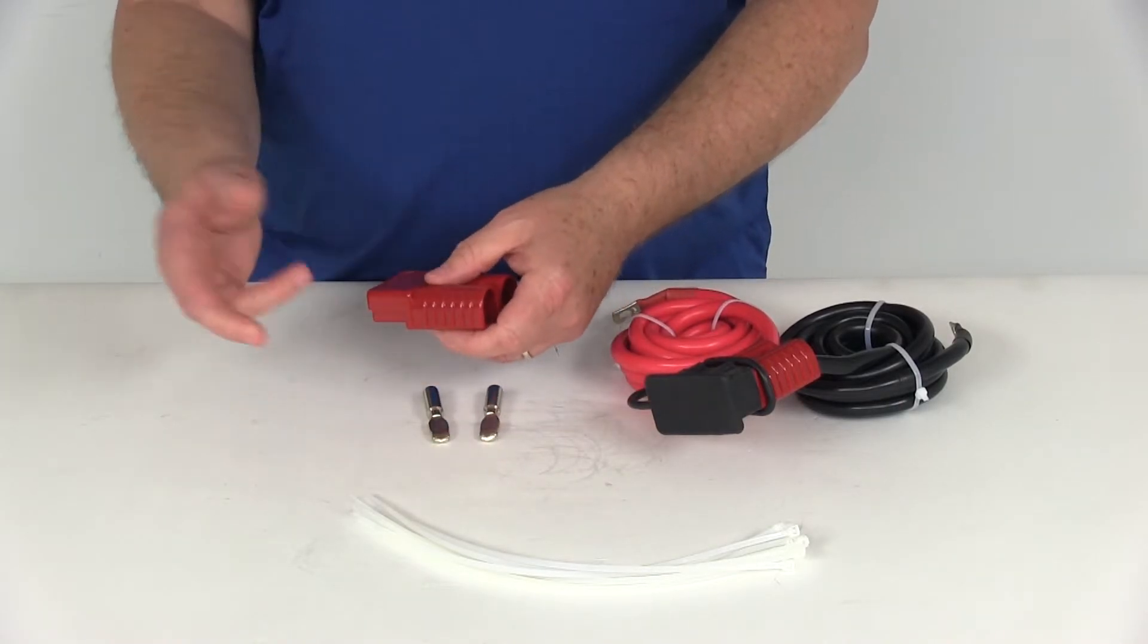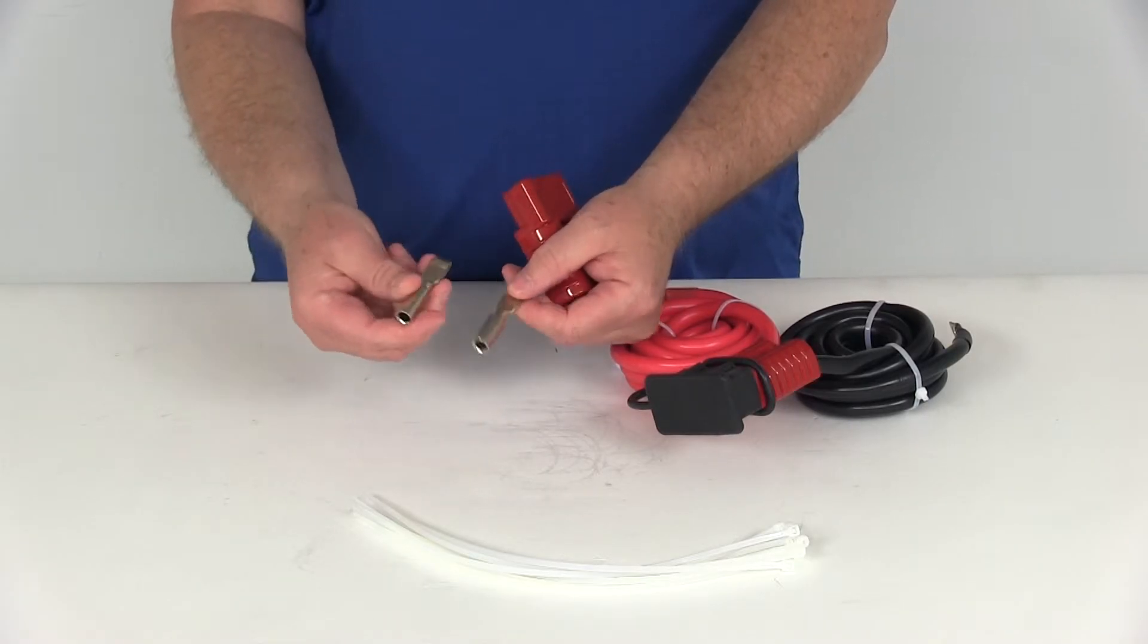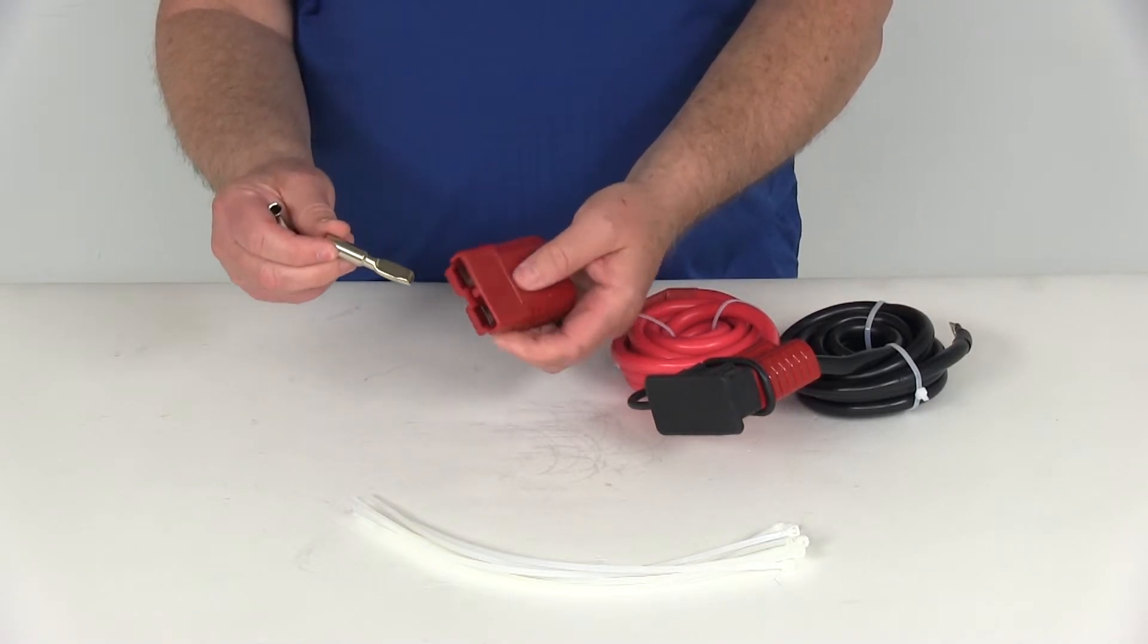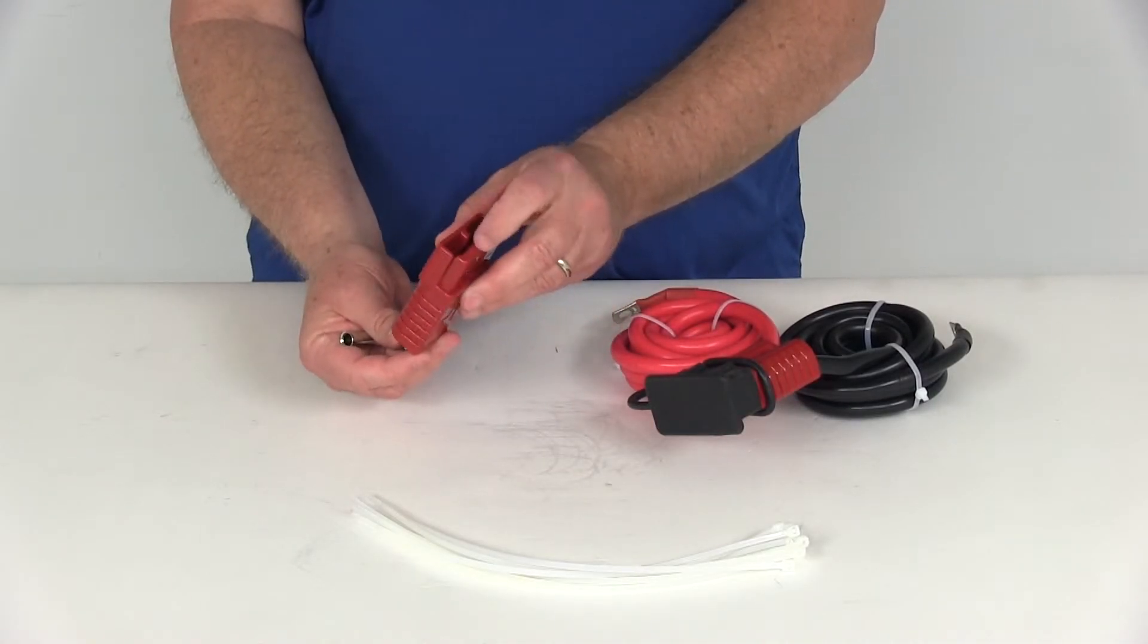Basically what you would do is take the wires from your winch, attach it, connect it to these terminals. And then these terminals, what you would do is just go ahead and slide them right in and they'll lock into place.